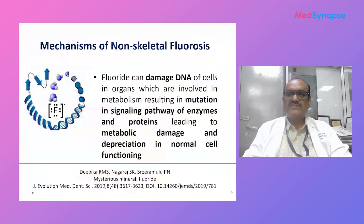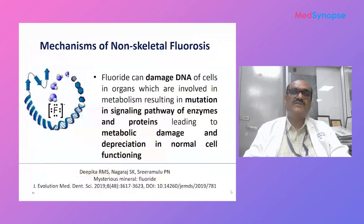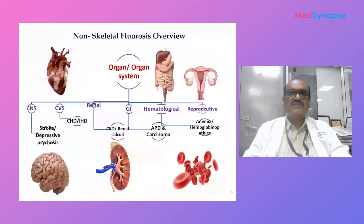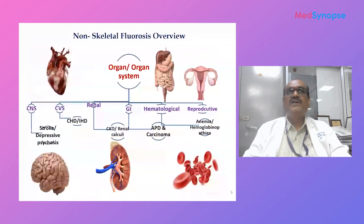We are concentrating on identifying where exactly these mutations lie and whether there is any impact of fluoride on various metal ions such as magnesium and manganese, and whether phosphate ions are also involved with DNA damage. The non-skeletal fluorosis has an impact on the CNS — including Alzheimer's disease, reduced IQ, Parkinson's disease, stroke, depression, and psychosis.